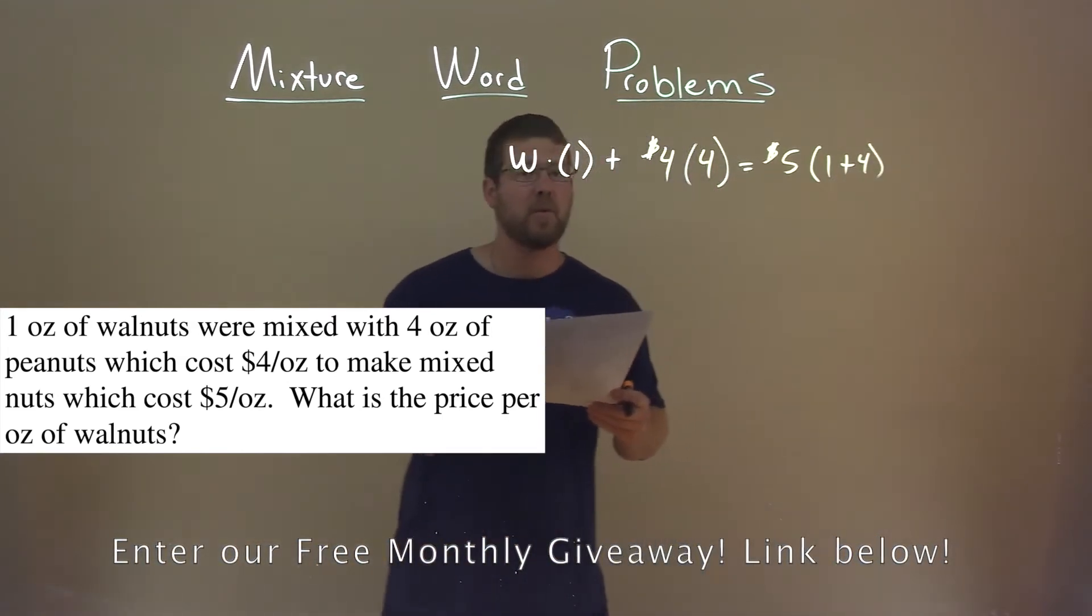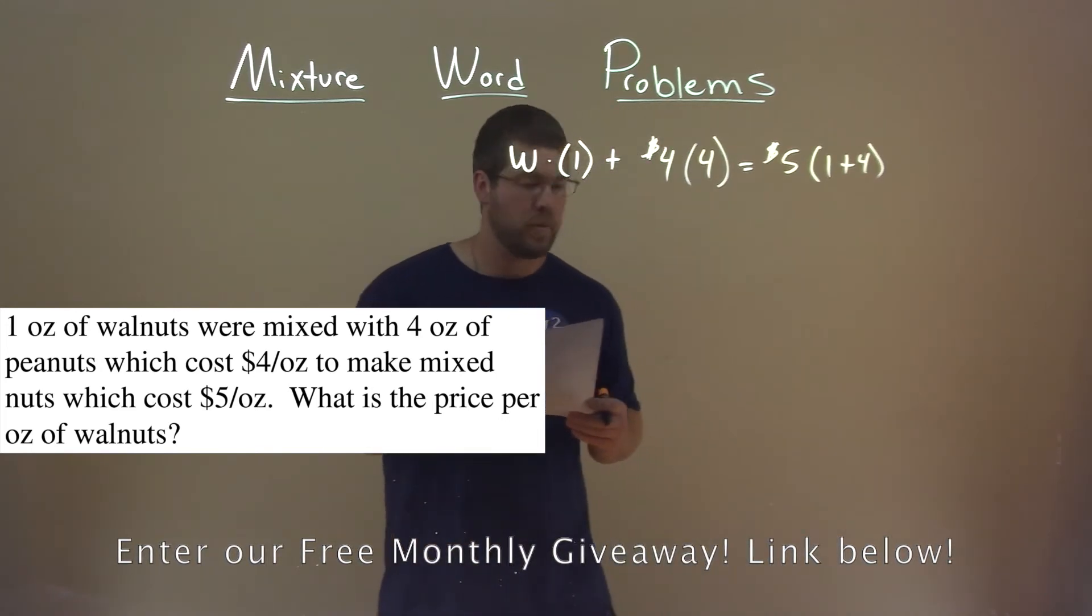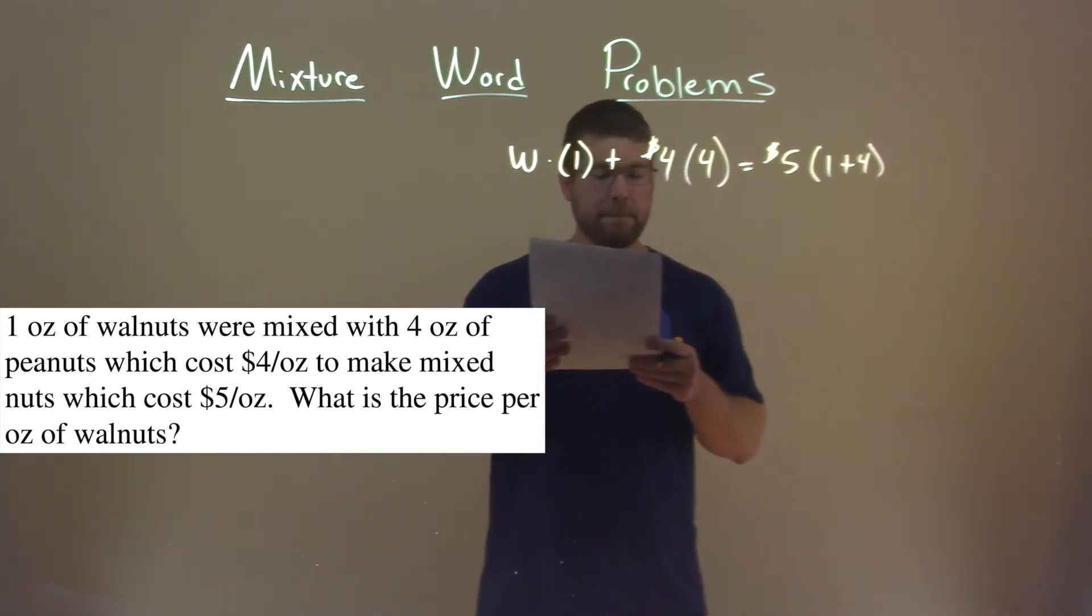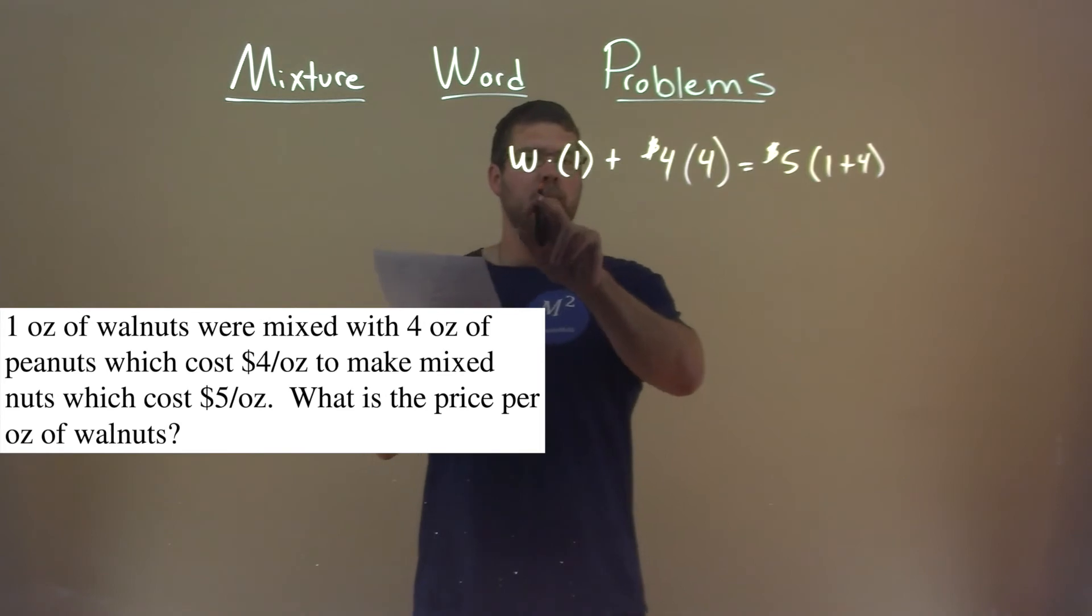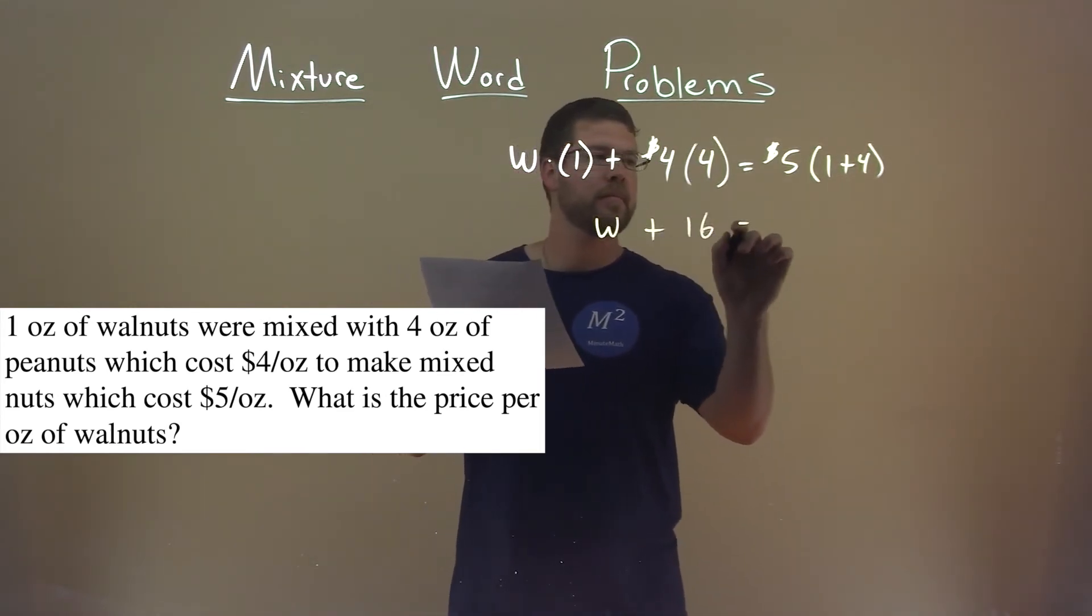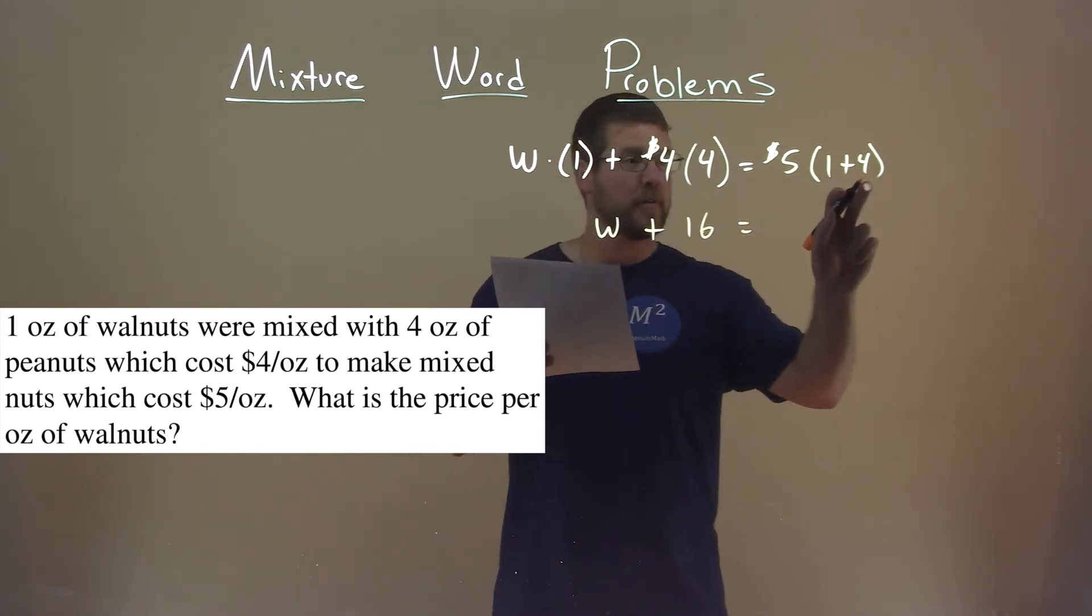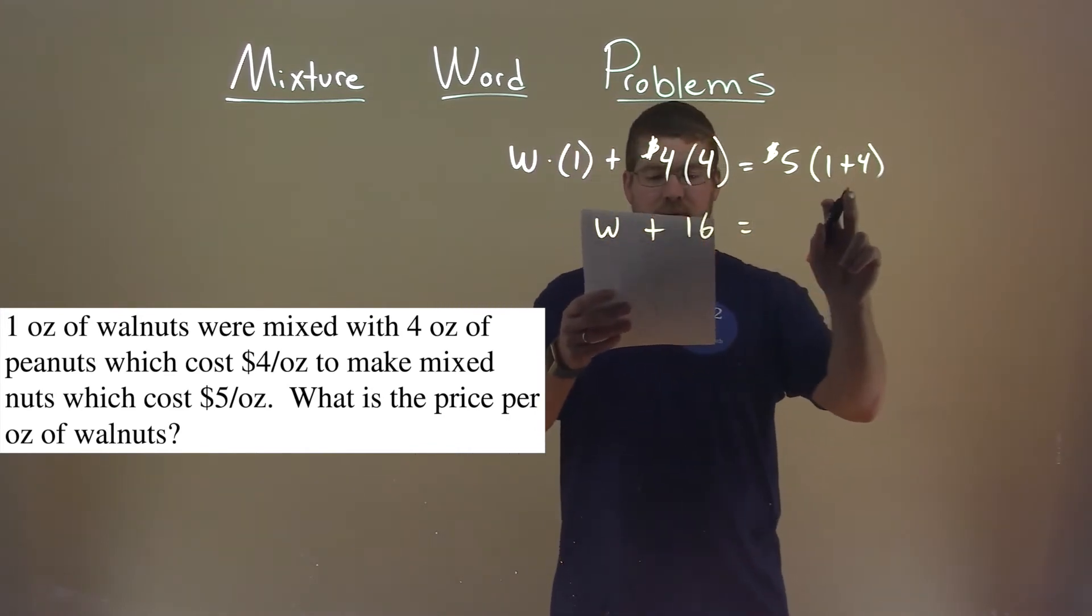So now we have an equation we can solve for W being the price of the walnuts. All right, well, one times W is just W, and four times four is 16. One plus four is five, and five times five is 25.